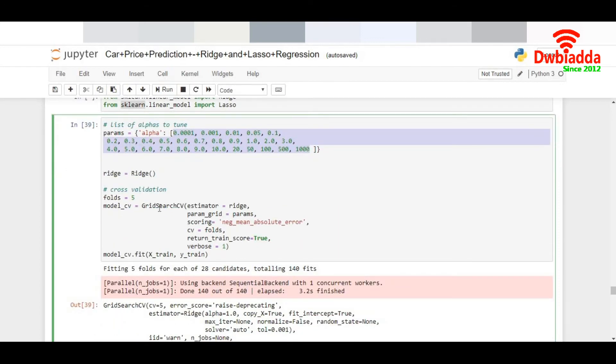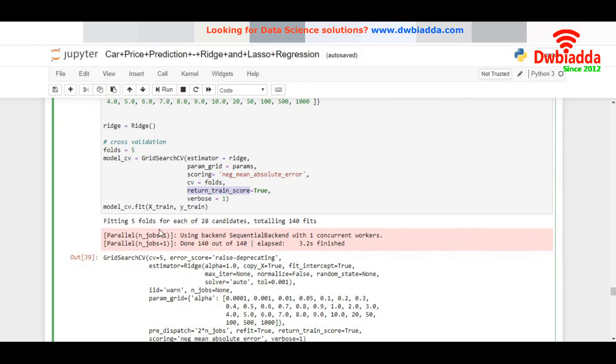I do a grid search CV. Estimator is ridge. The param grid, I pass it over here. Scoring is negative absolute error, which means I'm trying to build the model and score it based on the R square, which is the error, the square of the difference between the actual value and the predicted value. I do folds and number of folds is 5. I do a train score and I want the score of it so I make it as true. Now I do a fit. I do a model.fit.